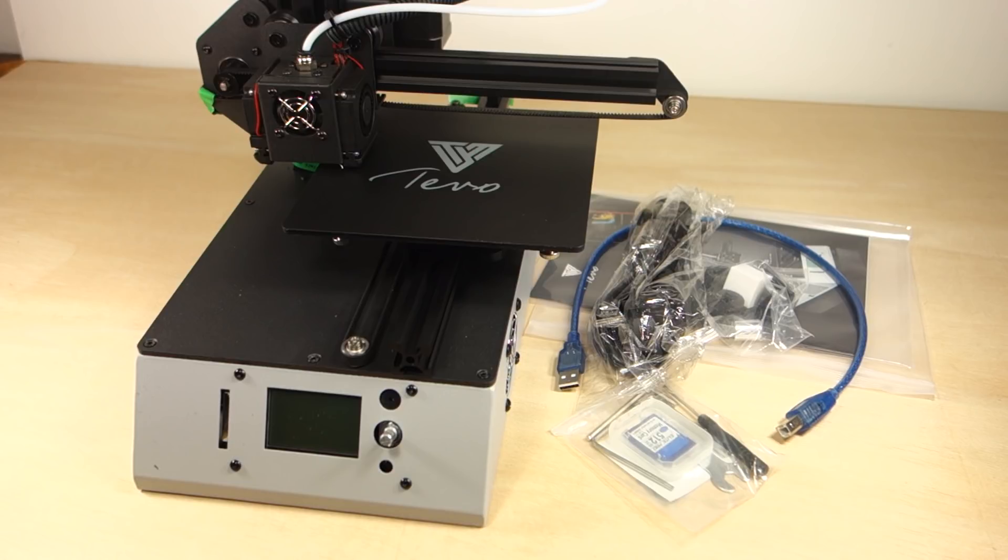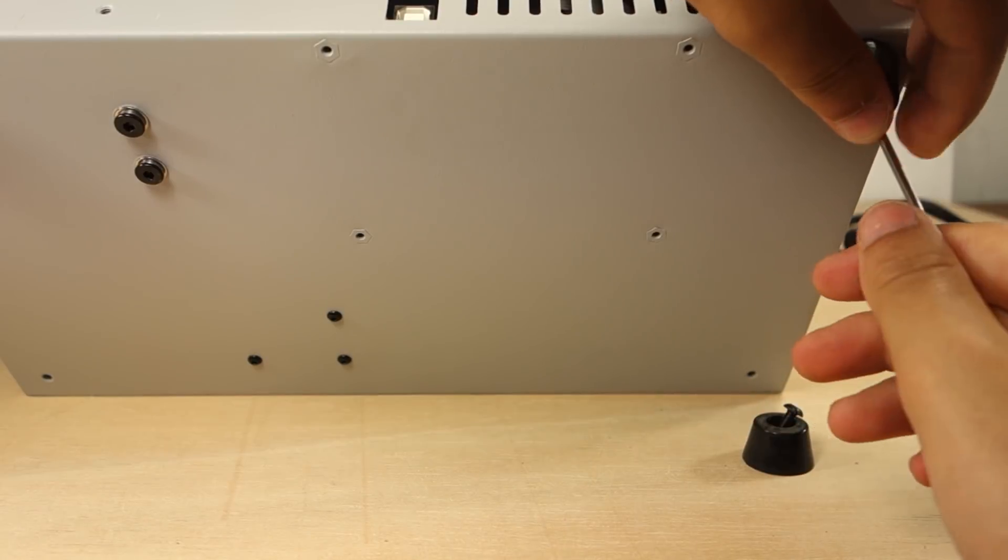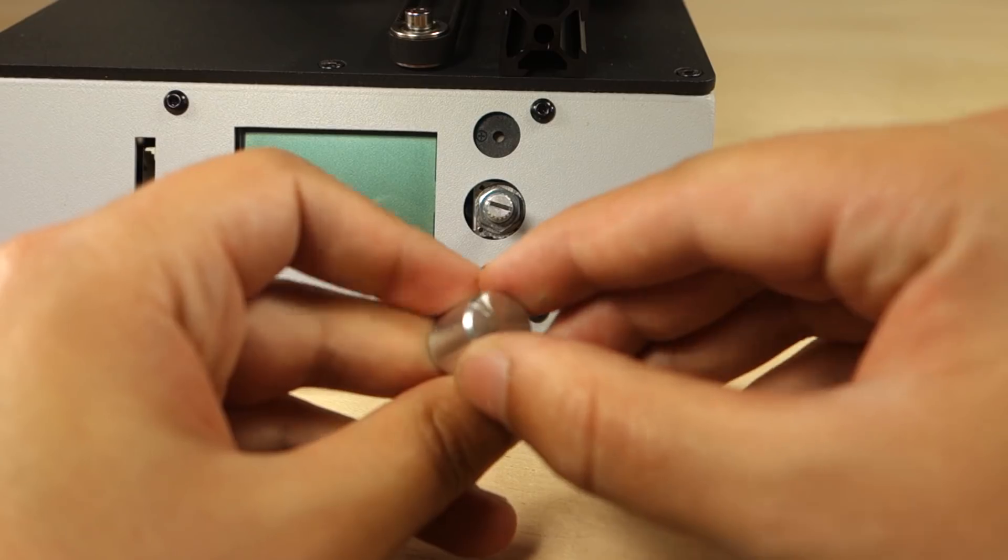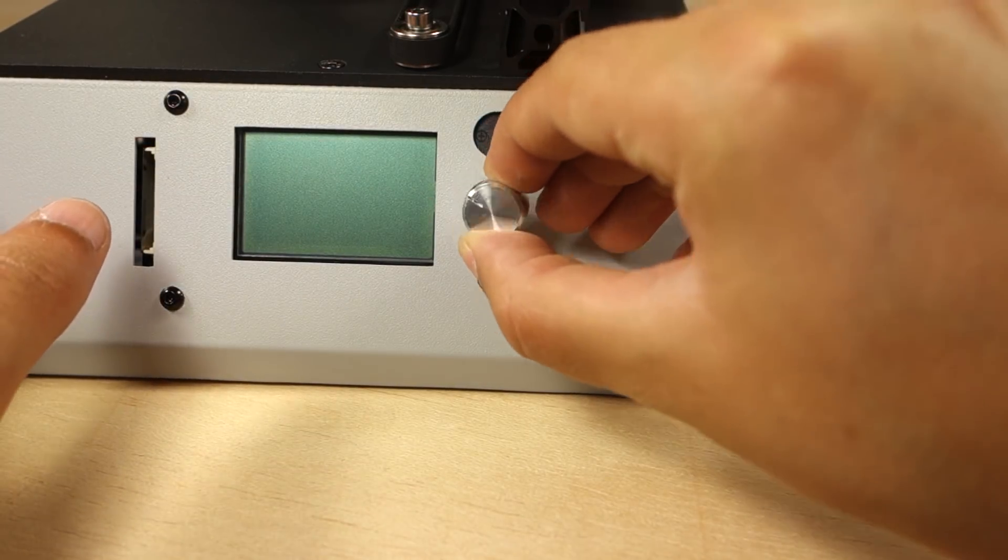The printer comes fully assembled. All you need to do is screw 4 rubber feet under the printer and attach the dial knob to control the 3D printer. And it's ready.